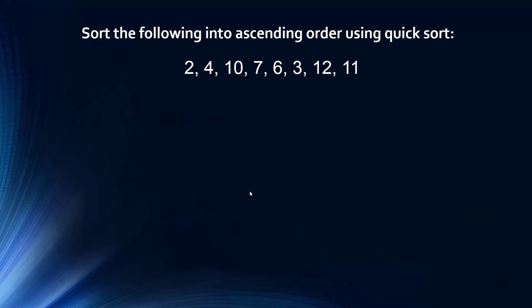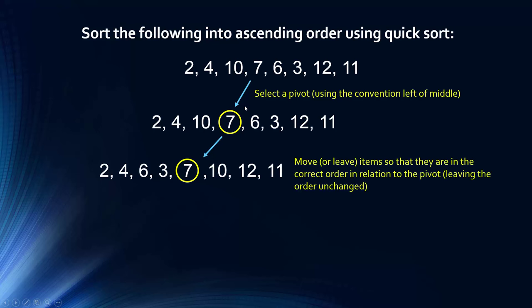So here's our list as an example, sorting into ascending order using quicksort. So first of all, we need to pick a pivot. And like I say, you can do whatever one you want, but I'm using the convention left of middle with eight items here. And the middle value, you can see the middle value is going to lie in between seven and six, or maybe I should say the center value. And we need to, I'm going to choose left of middle, which is seven. And then the next stage is to actually sort it. So we go through the list and we move items so that they are in the correct order in relation to the pivot. So you actually leave the order unchanged, you shift it around the pivot.